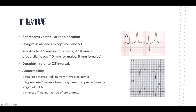Regarding T wave abnormalities: peaked T waves — tall and narrow — are a key sign of hyperkalemia. Hyperacute T waves are broader and more asymmetrical, and can be an early sign of STEMI or myocardial infarction.